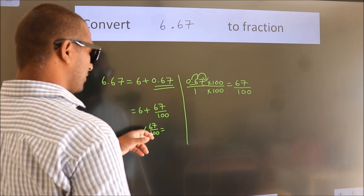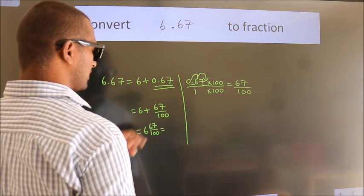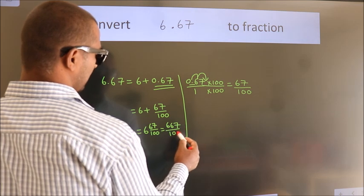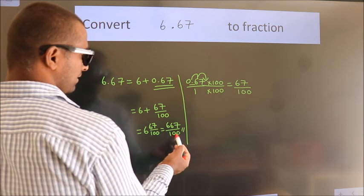6 plus 67 by 100 equals 600 plus 67, giving us 667 by 100 as our fraction.